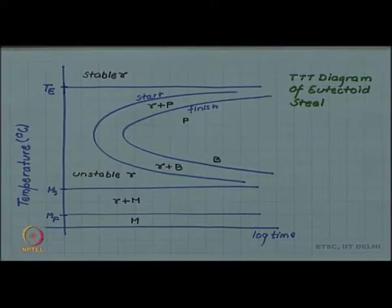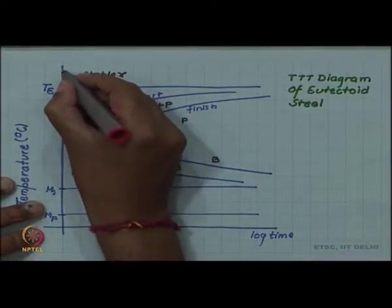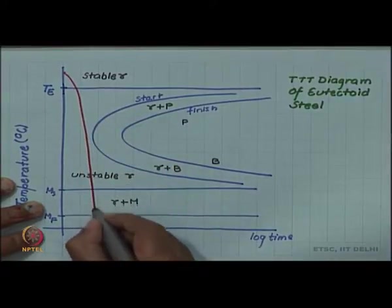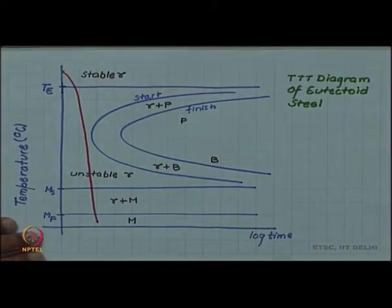We have seen that on quenching we produce martensite and this can be described by a TTT diagram like this. We drew a single cooling curve or a quenching curve like this giving us martensite.